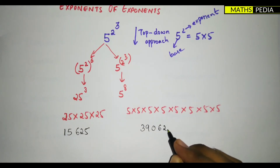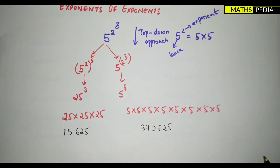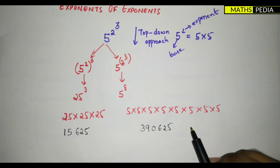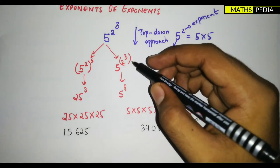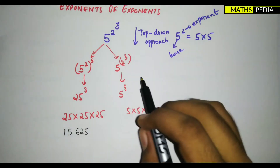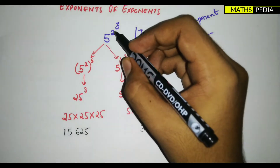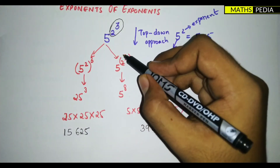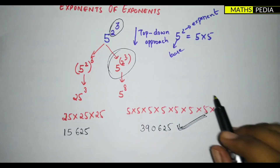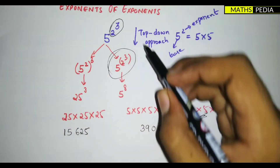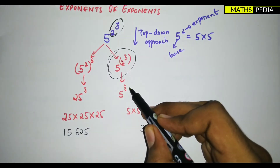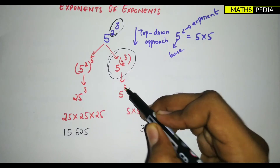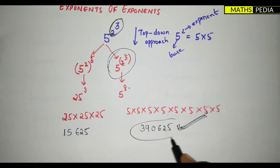So 25 to the power 3 gives 15,625, and 5 to the power 8 gives 390,625. These are two different answers. The correct one is the second — the top-down approach. You first compute the top exponent: 2 to the power 3 equals 8, then compute 5 to the power 8. That is the exact method to follow.